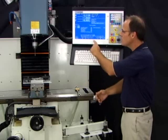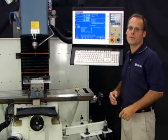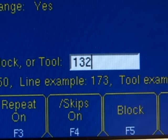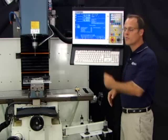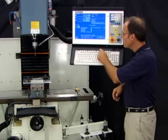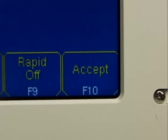You can start at any point in your program with this particular feature. Well when I hit e-stop the control is smart enough that it remembers the line that I hit e-stop on. And it's giving me an opportunity to back up a line or two or else restart right where I left off. If I want to restart right where I left off I hit F10 to accept that.